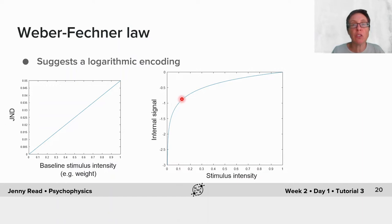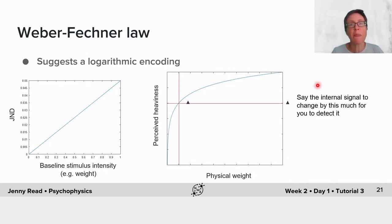That internal signal is monotonically related to the underlying stimulus intensity, but not linearly. It might have this logarithmic sublinear relationship. So if you ask yourself, what's the JND? Suppose the internal signal has to increase by this much, shown by this little triangle here, for me to detect the difference.